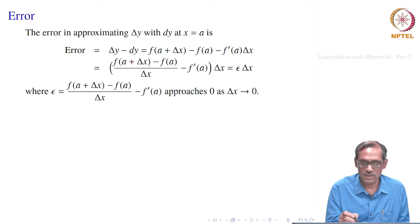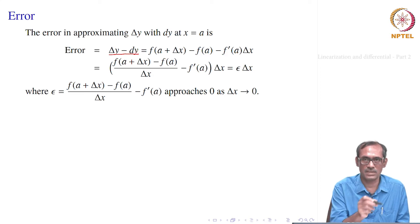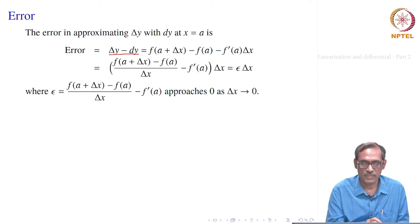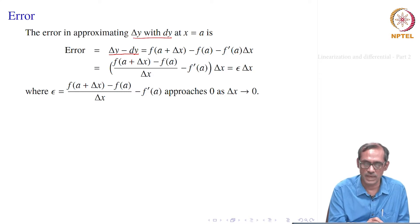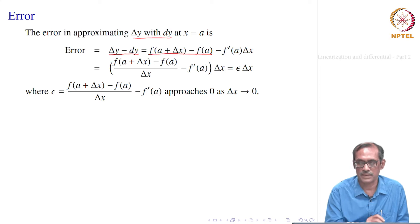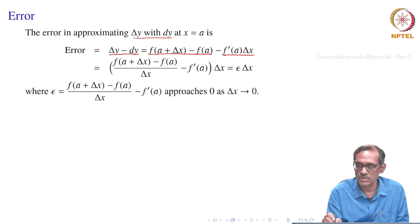Let us see that error again, how the error was coming up. The error was coming from delta y minus dy, earlier given as 0.01 times pi. This error in approximating delta y with the differential dy at a point x equal to a is delta y minus dy, where delta y is the increment in y, which is f of a plus delta x minus f of a, and the differential dy is f prime of a times delta x.